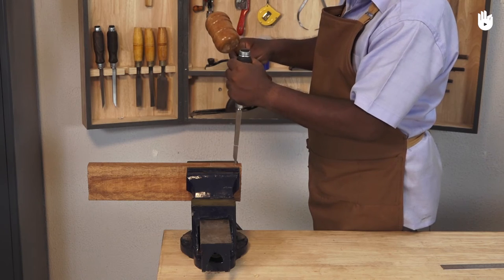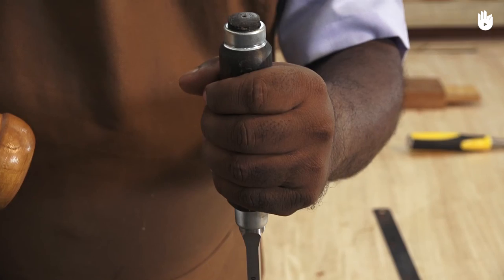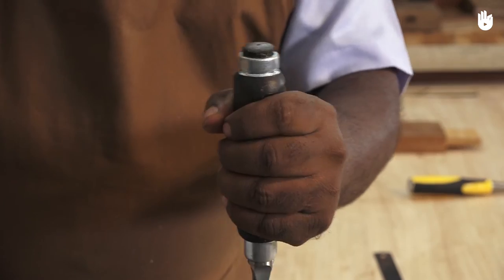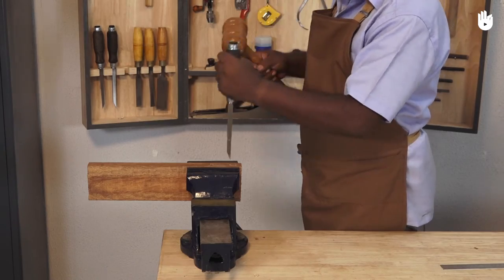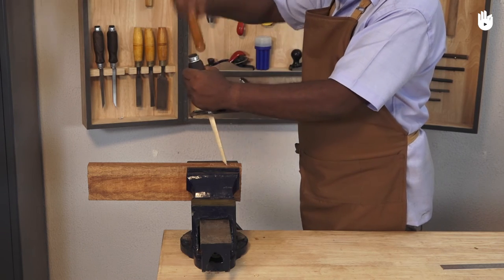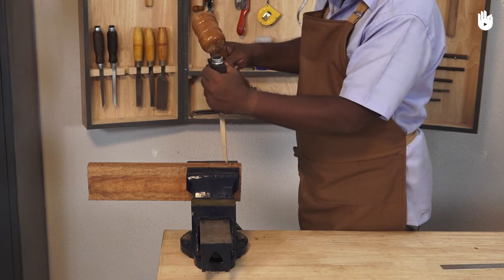Clasp the handle of the mortise chisel using your secondary hand. Wrap your thumb around its base but clear of the steel hoop. With your dominant hand, clasp the handle of the mallet, ready to strike the head of the chisel.